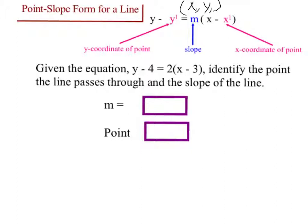Let me give you an example. Given this equation, we have y minus 4 equals 2 times (x minus 3). It says identify the point that the line passes through and the slope. Well, the slope is right here. So what's the slope? The slope is two. Okay, that's easy.